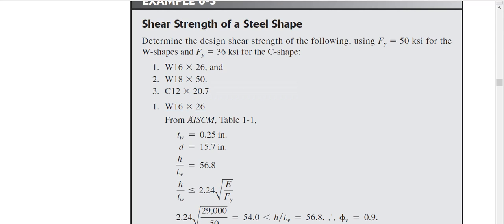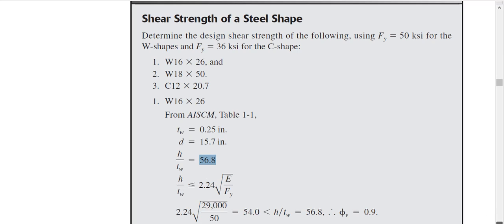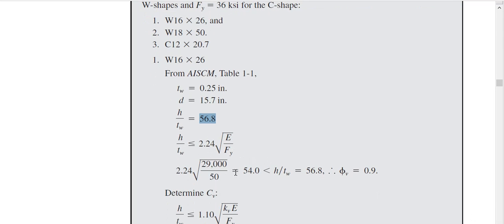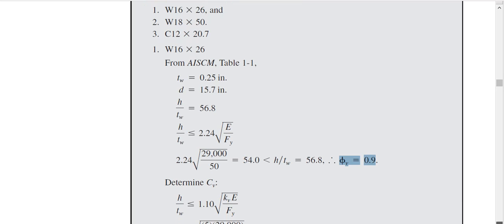Number one, W16 by 26, from AISC manual table 1-1, we can find that for this section, TW is 0.25 inch, D is 15.7 inch, this ratio we can find from the table 56.8, and then you can see this ratio is becoming more than this. This portion yields 54, and this portion yields 56. That means that equation is not satisfied. As it is not satisfied, my phi V is 0.9, and my Cv is not one, at least is not one.